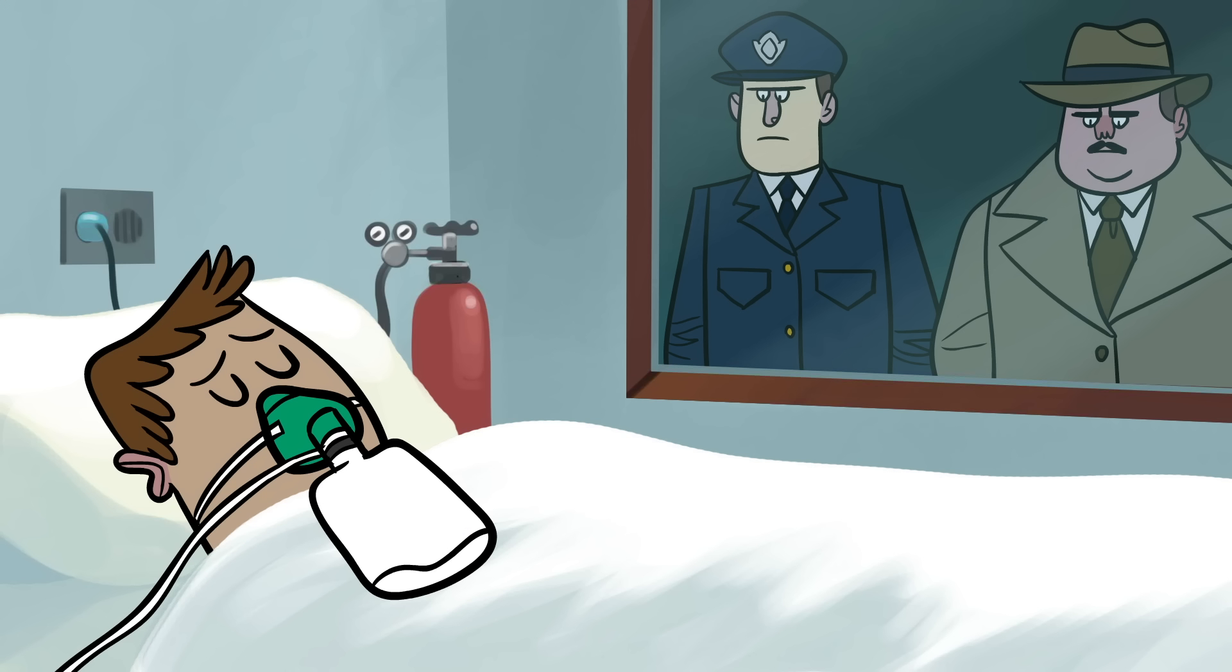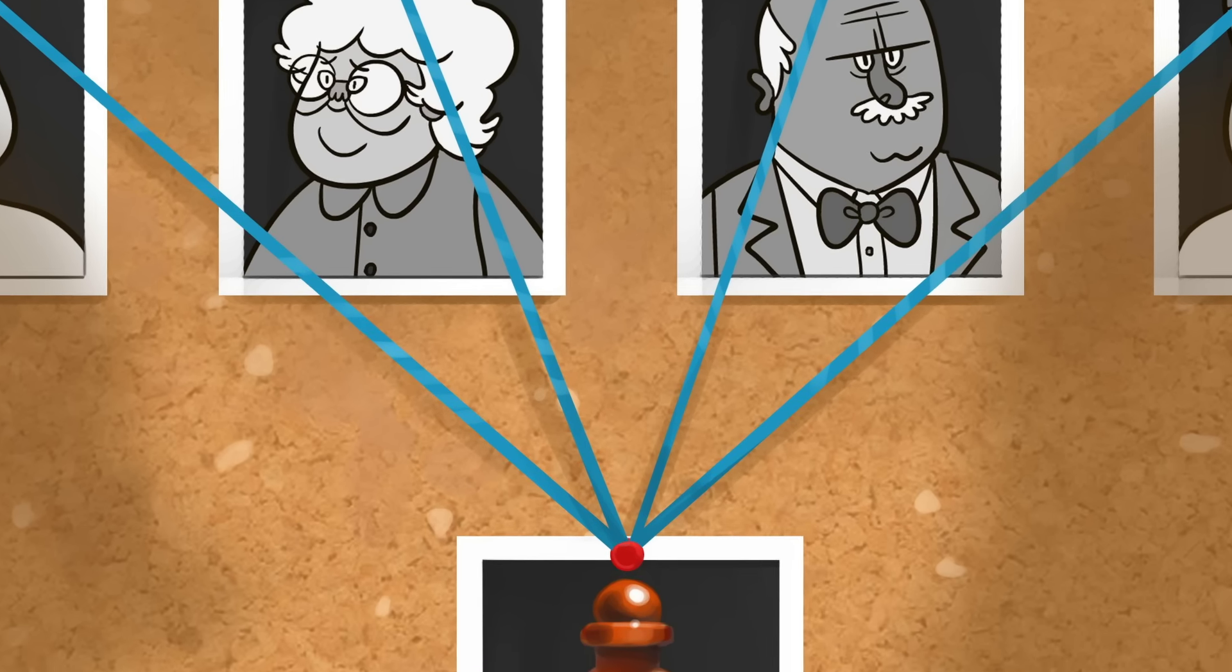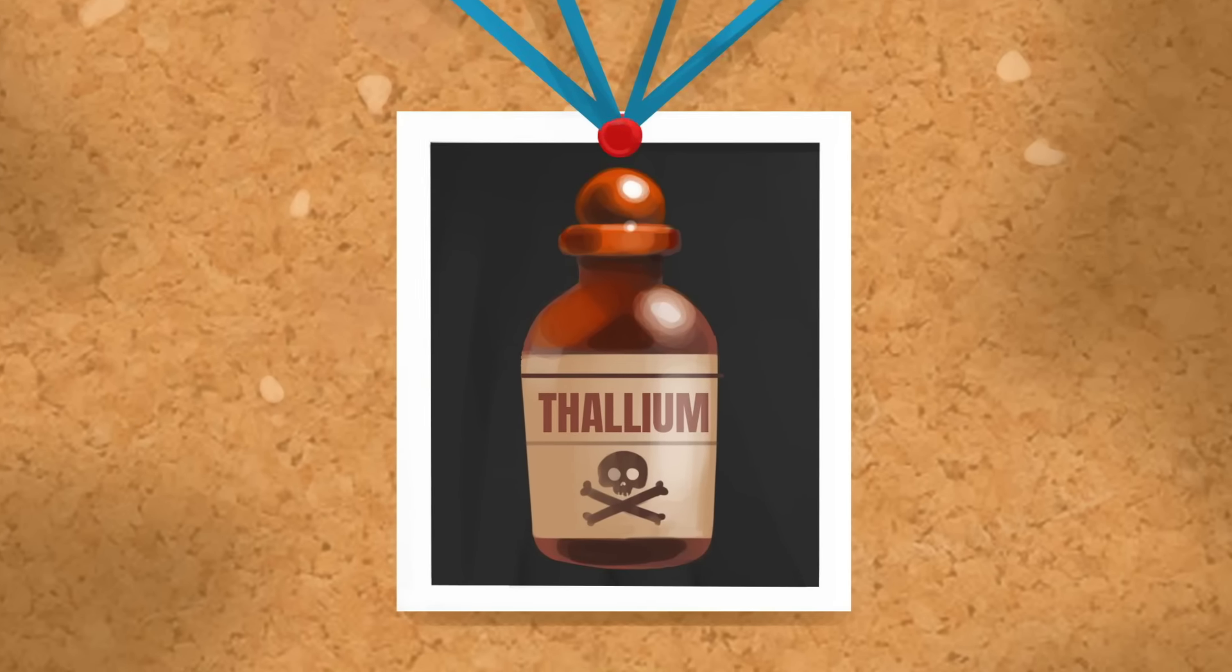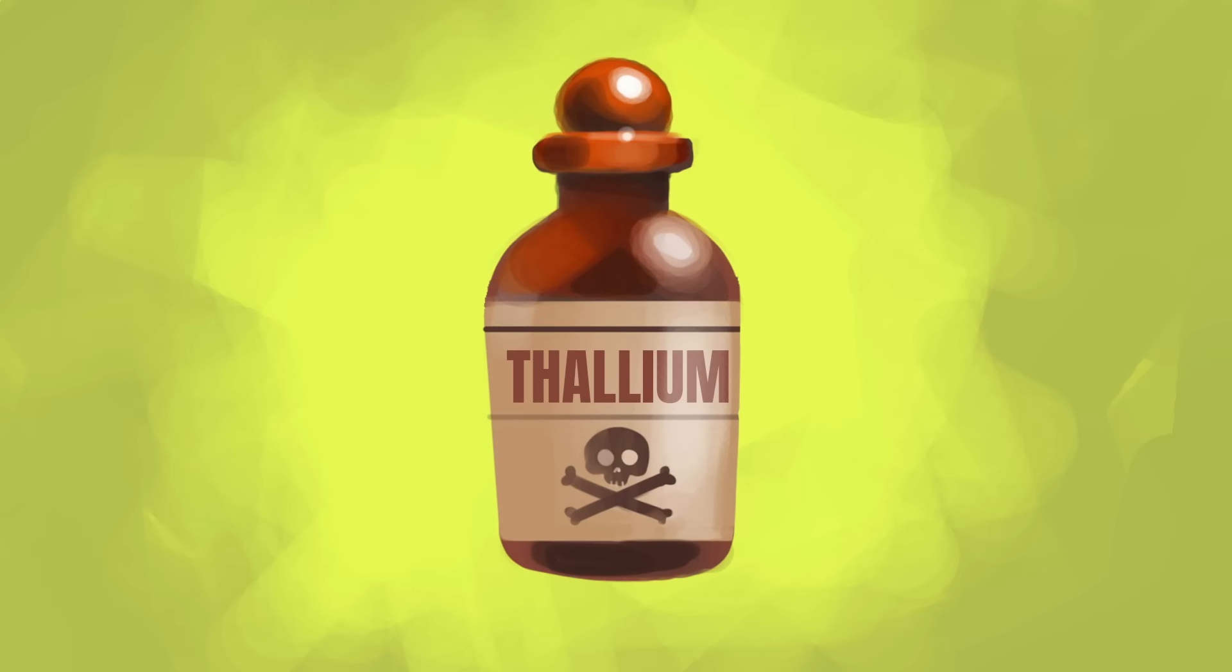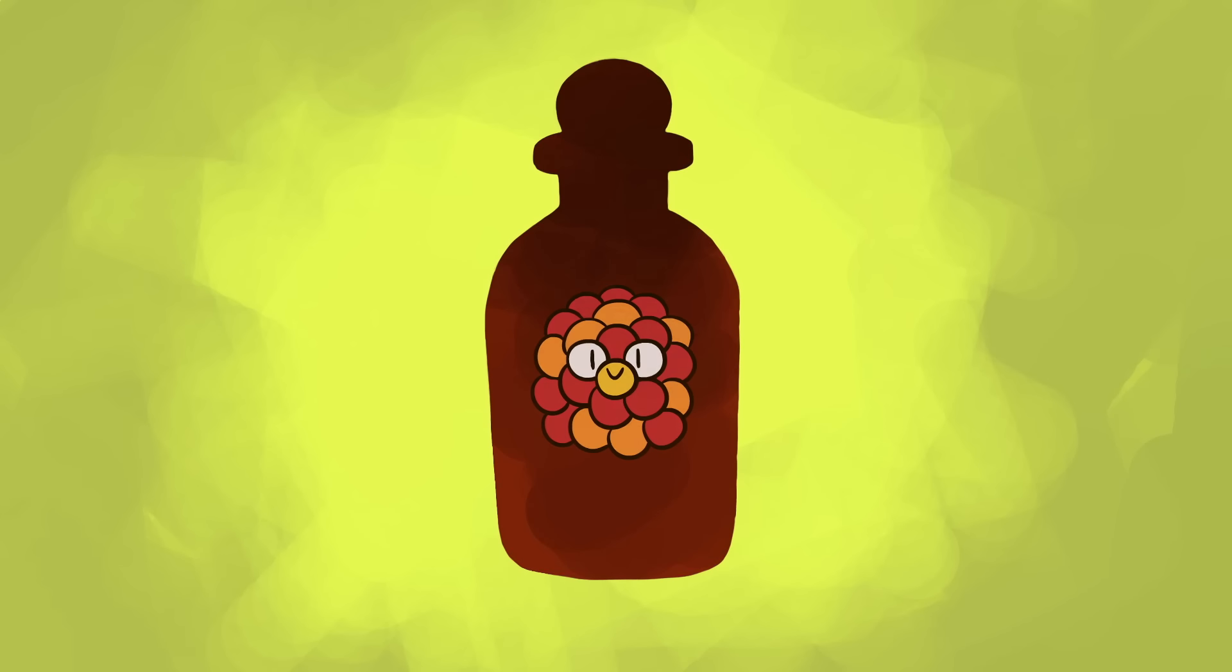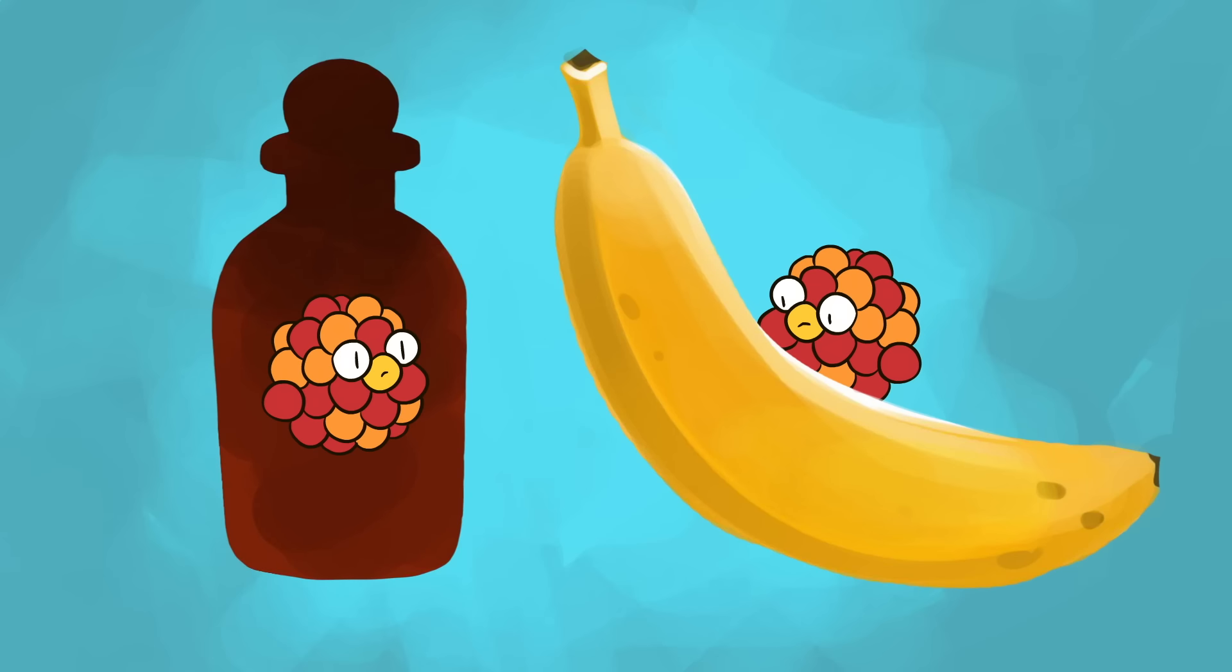From 1952 to 1953, Sydney detectives investigated a staggering number of murder and attempted murder cases that were unrelated yet shared a common element — thallium poisoning.